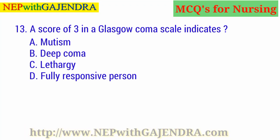A score of 3 in a Glasgow Coma Scale indicates: A. Mutism. B. Deep Coma. C. Lethargy. D. Fully responsive person. The right answer is B: Deep Coma.